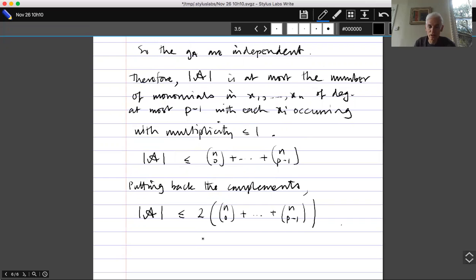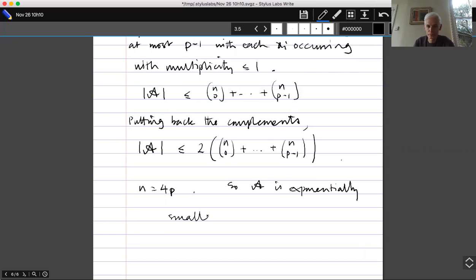And then the last remark I'll make is that remember that n was 4p, and so p minus one is roughly n over four. So we're looking at the sum of the binomial coefficients up to n over four. And if we divide by 2 to the n, that's giving us the probability that if you toss a coin n times you get at most n over four heads. When n is large, that's an exponentially small probability. So that gives us that A is exponentially smaller than 2 to the n, or equivalently 2 to the minus n times the size of A is exponentially small in n.